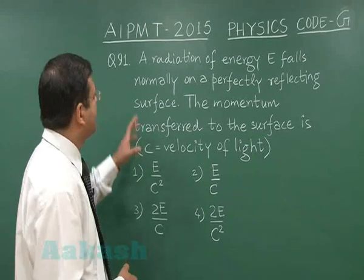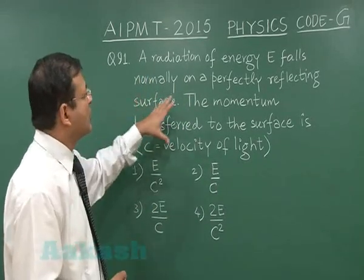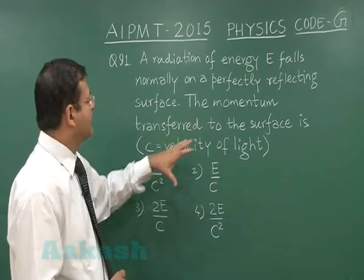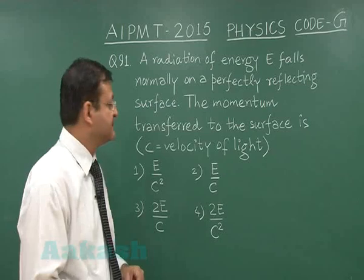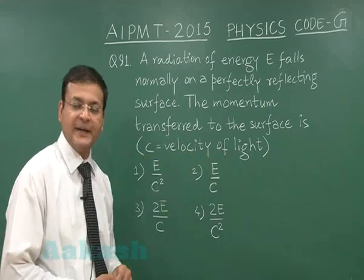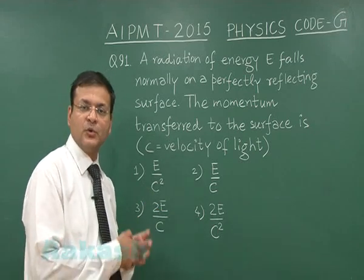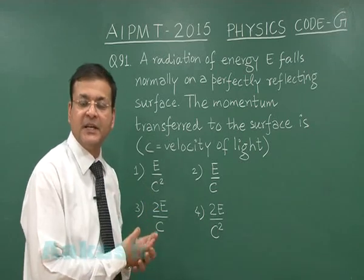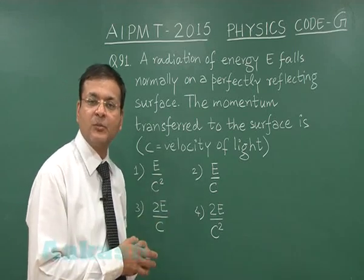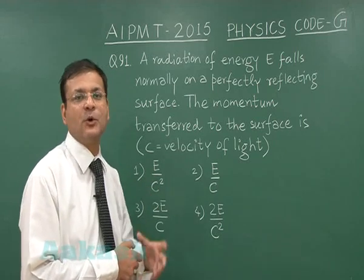Question 91 reads: radiation of energy E falls normally on a perfectly reflecting surface. The momentum transferred to the surface is — and they have given you the notation C as the velocity of light. This is a standard property of a photon. You can categorize this question either in EM waves or dual nature of radiation and matter. The standard formula says that momentum of a photon is basically energy upon C.